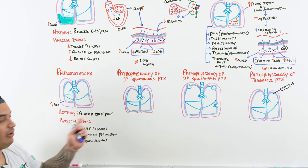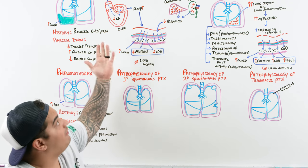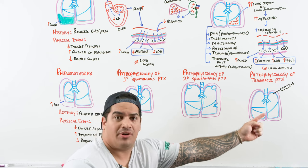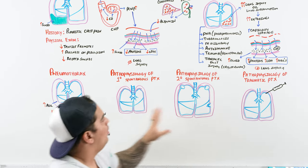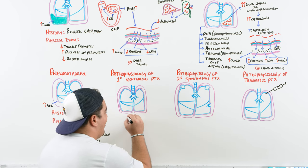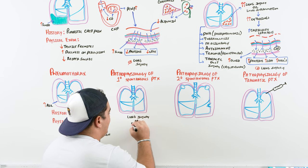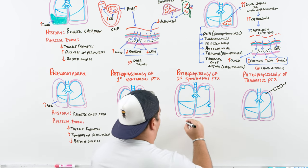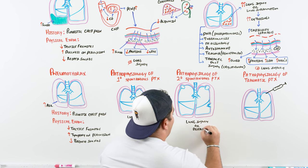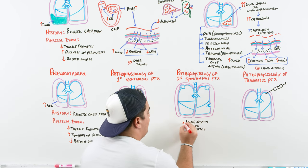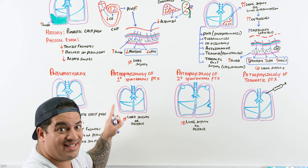So pneumothorax findings are: decreased tactile fremitus, tympani on percussion, decreased breath sounds, pleuritic chest pain, and dyspnea. The causes of pneumothorax fall into three categories: primary spontaneous pneumothorax, secondary spontaneous pneumothorax, and traumatic. In primary spontaneous pneumothorax there is no underlying lung injury or disease; in secondary spontaneous pneumothorax there is underlying lung injury or disease.